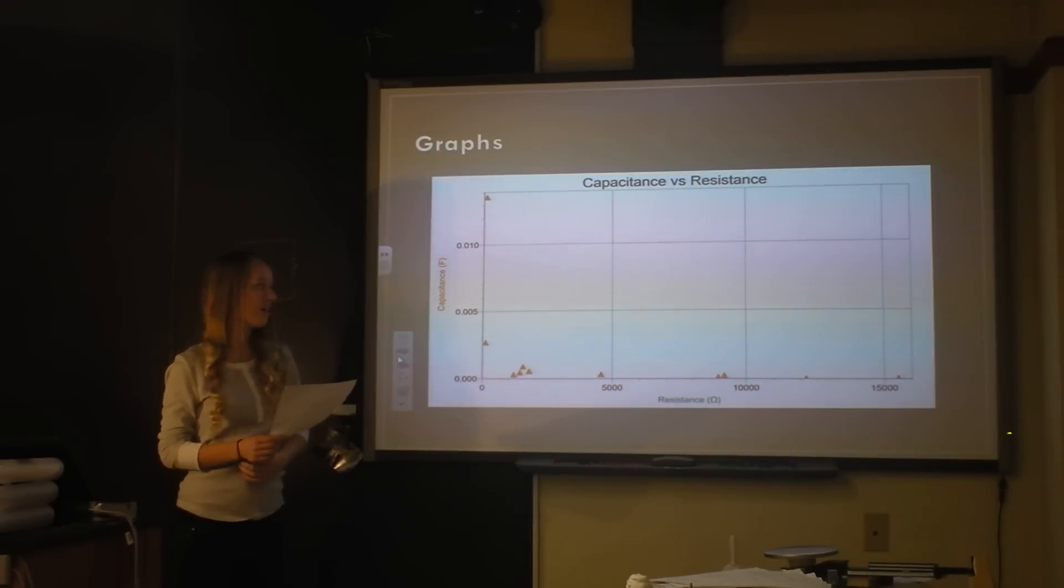So since they were acting as capacitors, I found the capacitance. And the capacitance was a lot higher for lower resistances, which is not what I predicted. Those are in farads. Is that okay? Yeah, those are big capacitors. Like, that's 10 millifarads. Well, 10 millifarads is a really big capacitance. How did you find capacitance?